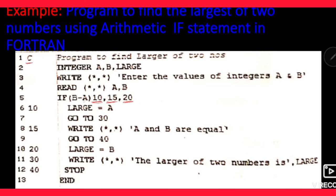Ab isme dekho: B minus A. Maan lo B ki value 20 aur A ki value 30. To B minus A negative aayega — 20 minus 30 will be equal to minus 10. To kaunsi statement execute hogi? Statement number 10. Kyunki difference jo hai in dono numbers ka negative aaya hai. Statement number 10 mein likha hua hai: large is equal to A. Kyunki B minus A ka difference negative aaya hai, isse pata chal raha hai ki A greater number hai aur B smaller hai. To large is equal to A — means large variable A ki value store kar lega, because A is larger.